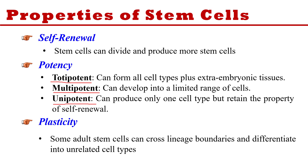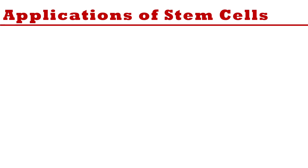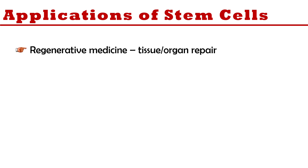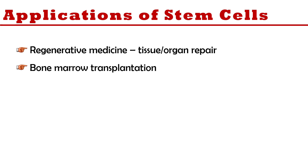Now the applications of stem cells — where you can use them. The first application is regenerative medicine. If you want to repair any tissue or organ, you can use stem cells, because embryonic stem cells can change into any kind of cell and can be utilized to repair damaged tissue or organ. The second application is bone marrow transplantation — stem cells can be used when bone marrow transplantation is needed.